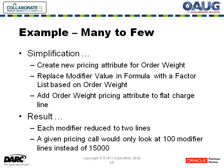Every discount line had a qualifier that was a range of order weight. So we replaced the formula line with a factor list — essentially a lookup table — that says if the weight is 0 to 1, use this value; if it's 1 to 2, use that value. This worked because the value on each individual modifier line was consistent: looking across all 150 modifiers, the 0-to-1 pound line all had the same value, so we consolidated that into one list. We also added the weight pricing attribute to the flat charge line. Each modifier went from 151 lines to 2 — one representing the flat charge, and one representing the actual calculation using a lookup instead of 150 qualifier lines.